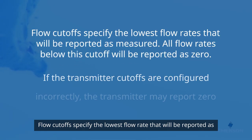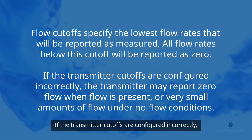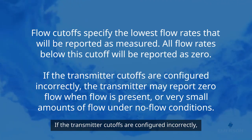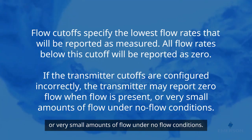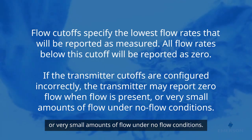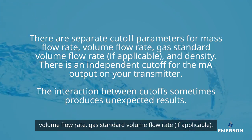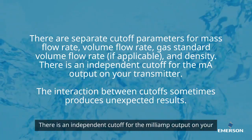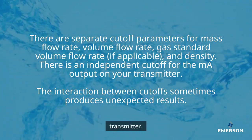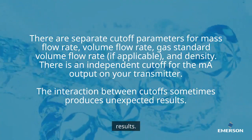Flow cutoffs specify the lowest flow rate that will be reported as measured. All flow rates below this cutoff will be reported as zero. If the transmitter cutoffs are configured incorrectly, the transmitter may report zero flow when flow is present, or very small amounts of flow under no-flow conditions. There are separate cutoff parameters for mass flow rate, volume flow rate, gas standard volume flow rate (if applicable), and density. There is also an independent cutoff for the milliamp output on your transmitter. The interaction between cutoffs sometimes produces unexpected results.